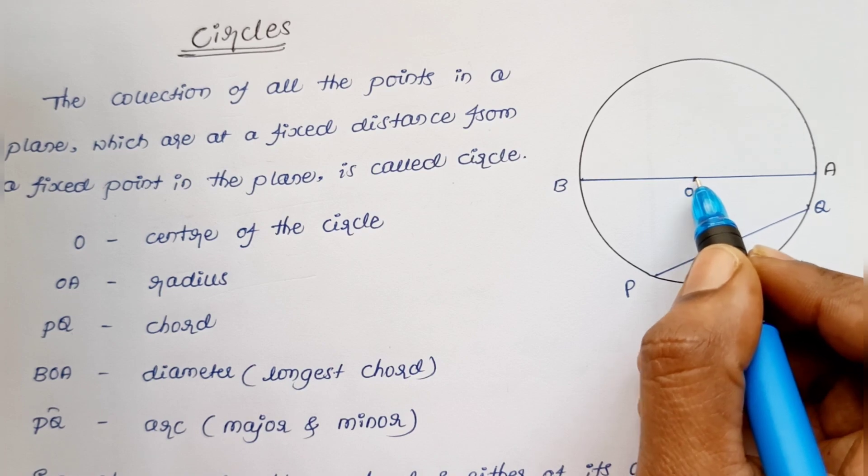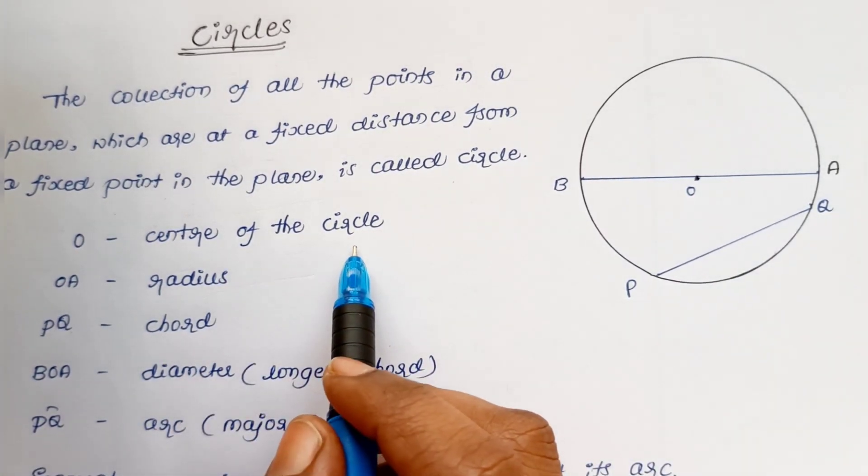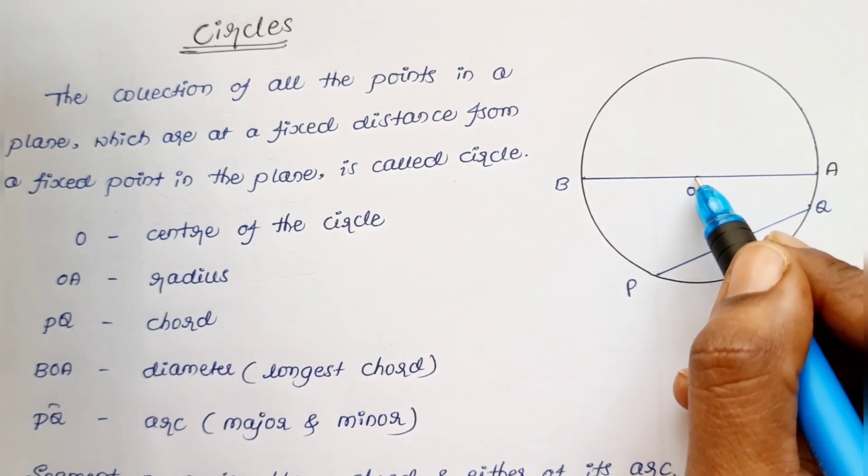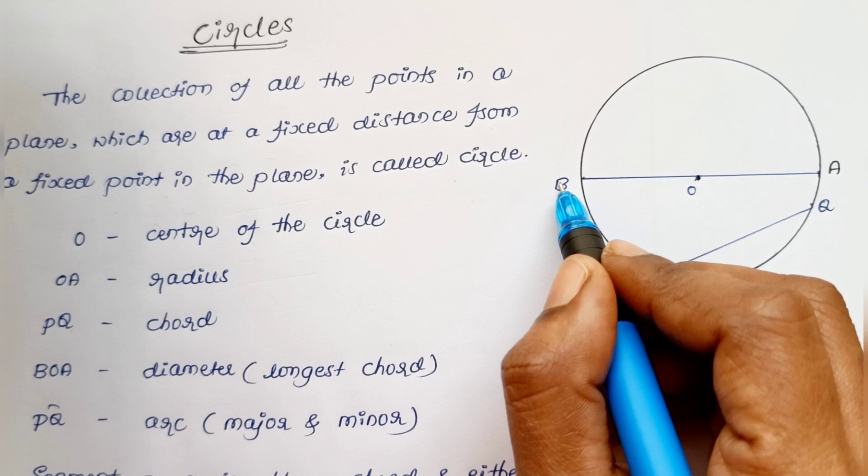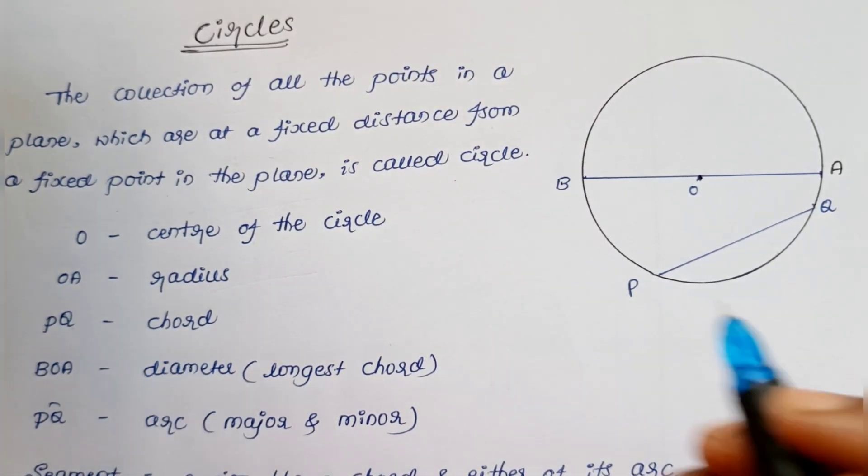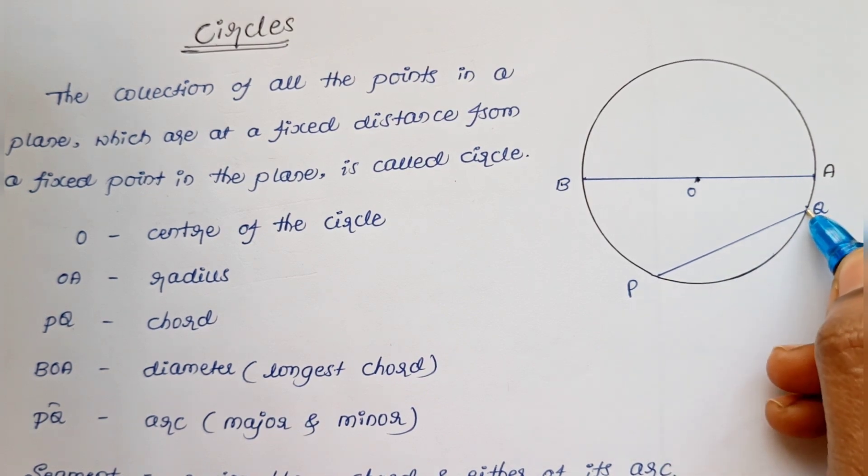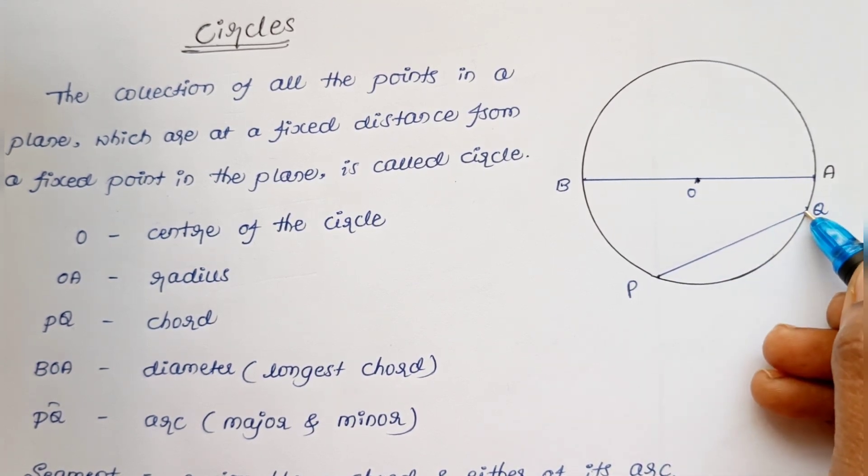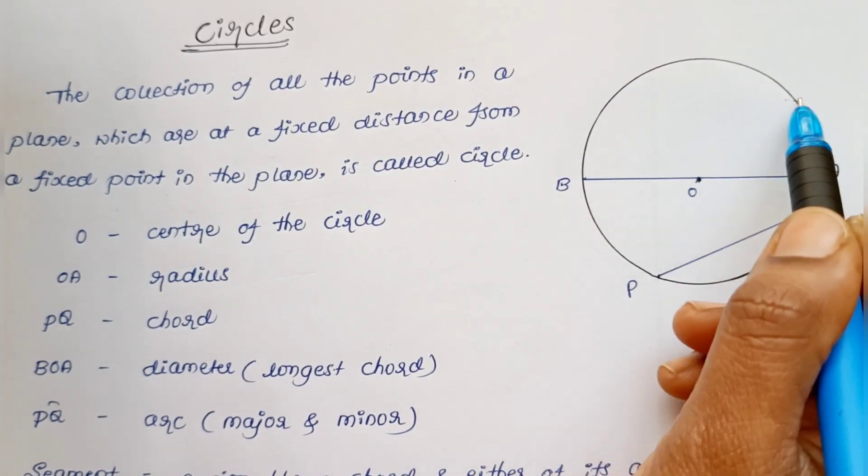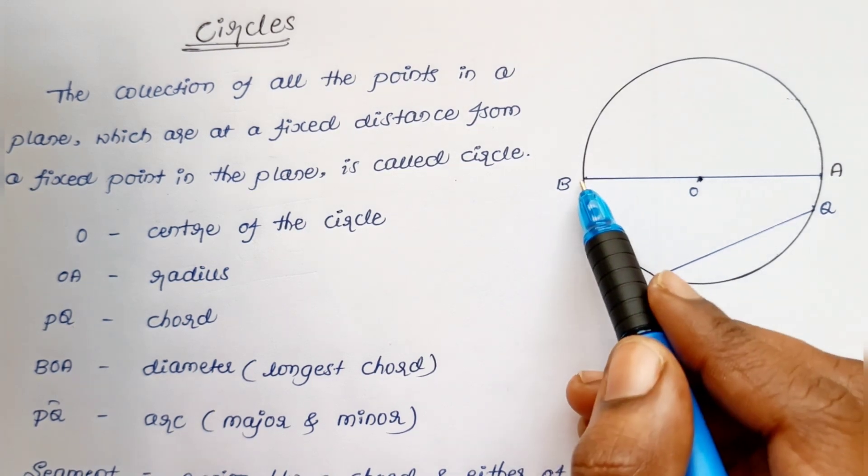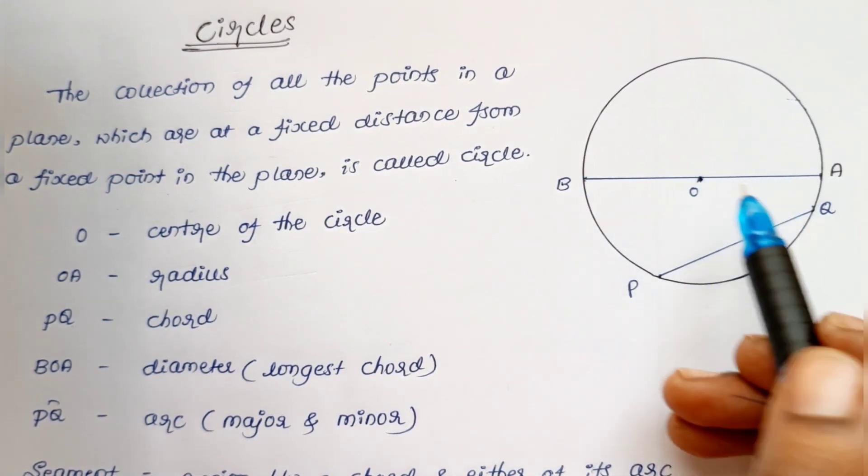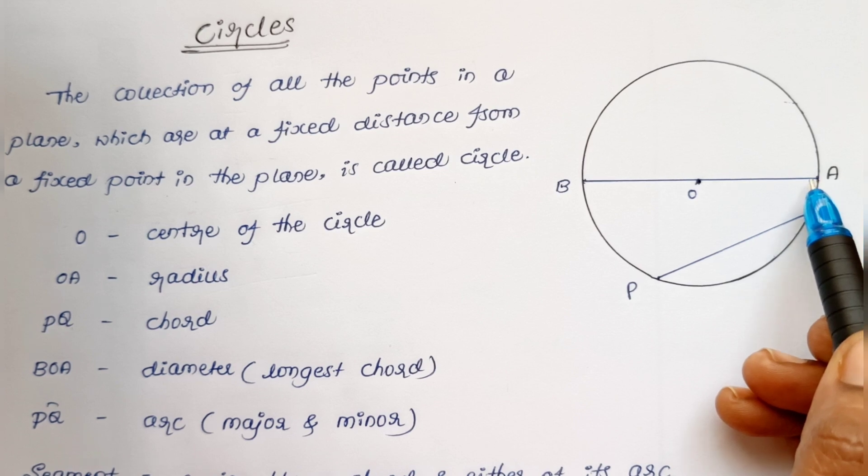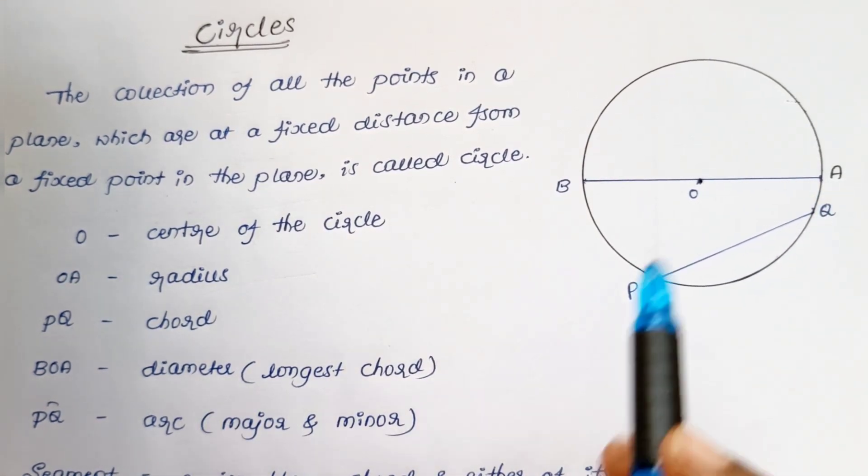The fixed point is the center of the circle. The distance from the center to any point on the circle is the radius. A line segment joining any two points on the circle is called a chord. The longest chord is the diameter, which passes through the center of the circle.